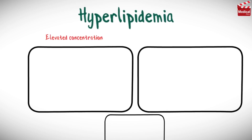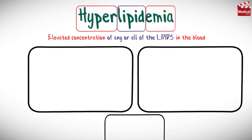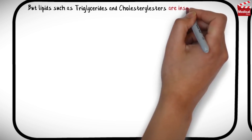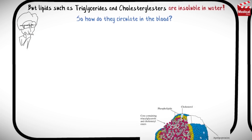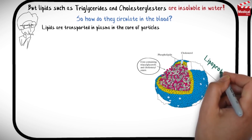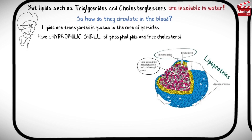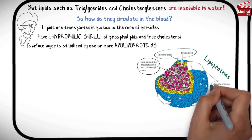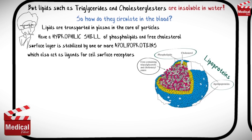Hyperlipidemia means elevated concentration of any or all of the lipids in the blood. But lipids such as triglycerides and cholesterol esters are insoluble in water, so how do they circulate in the blood? Lipids are transported in plasma in the core of particles known as lipoproteins, that have a hydrophilic shell of phospholipids and free cholesterol. This surface layer is stabilized by one or more apolipoproteins, which also act as ligands for cell surface receptors.